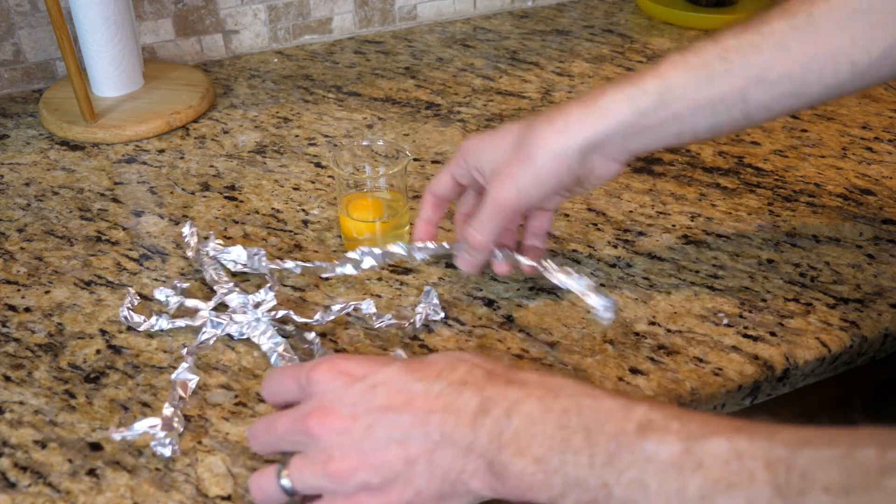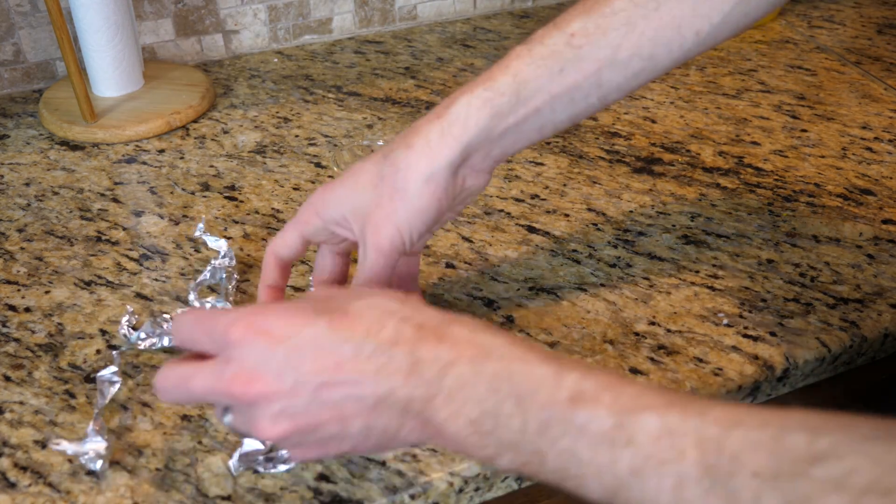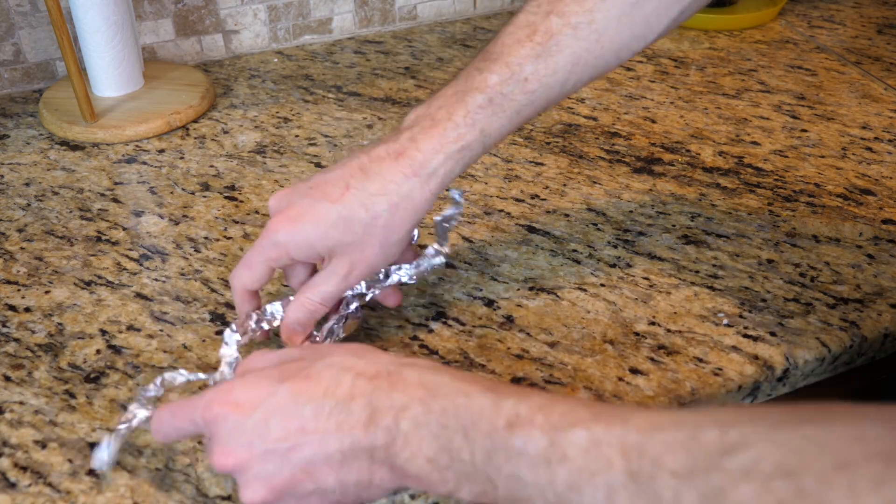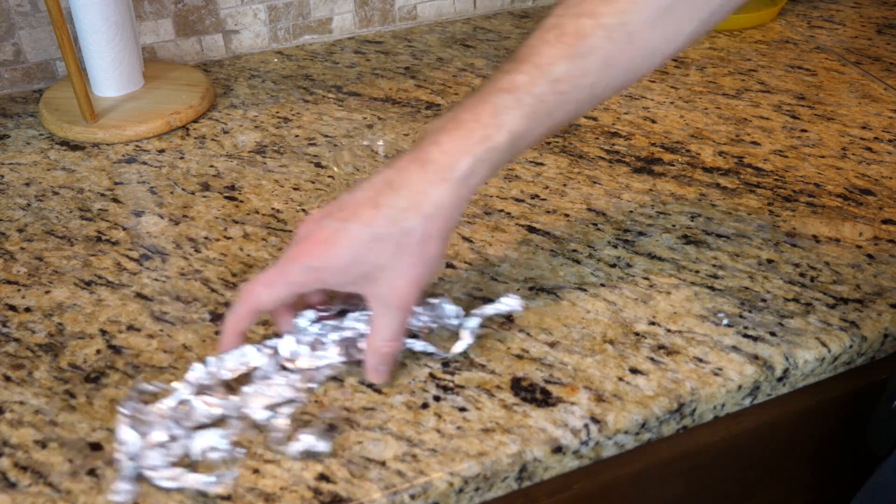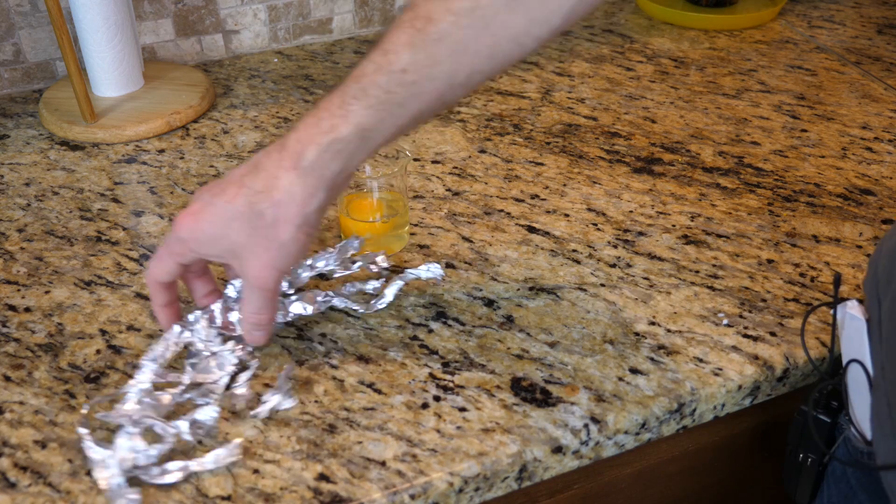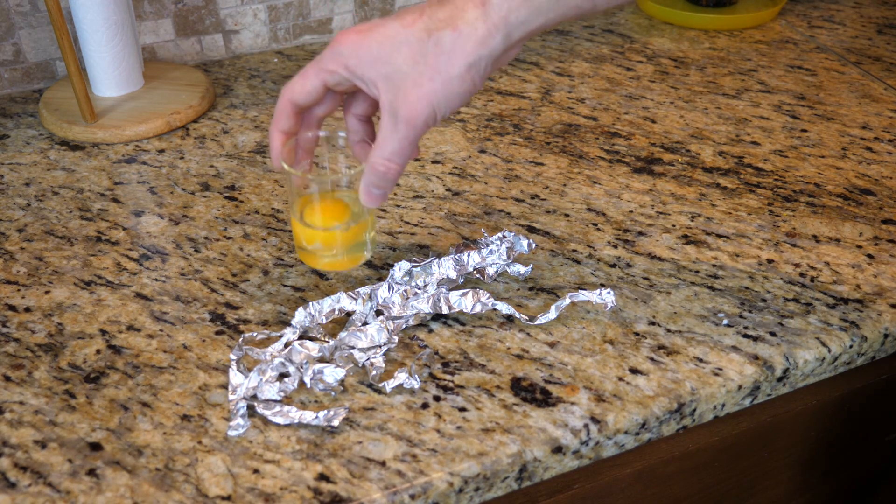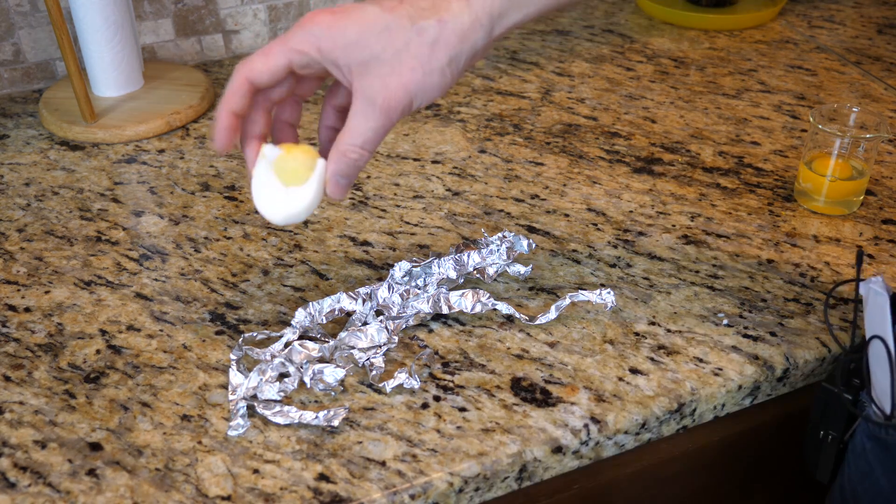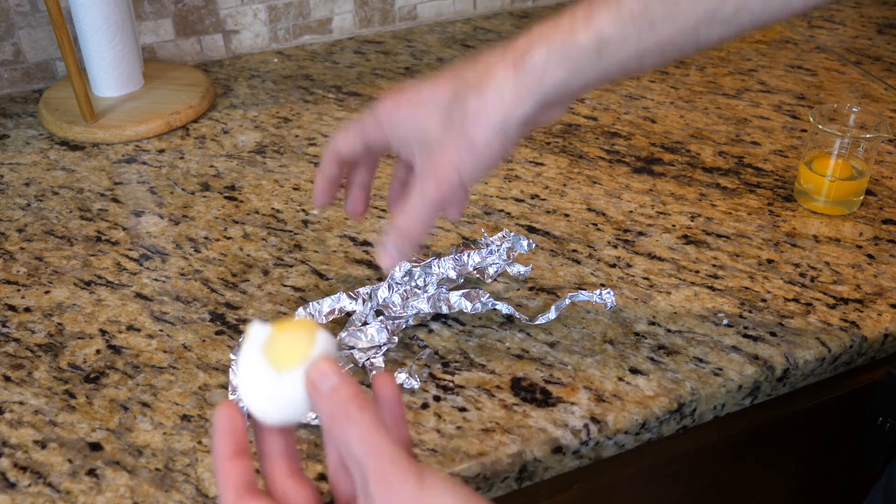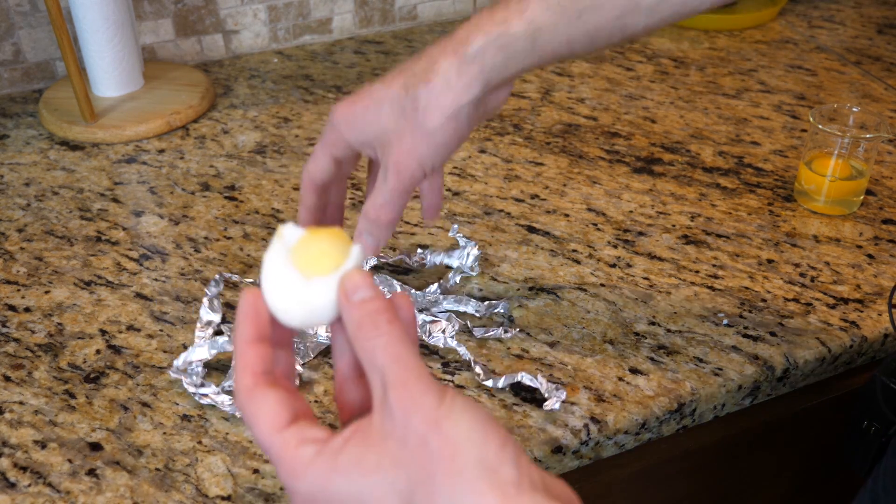So the proteins denature and they all kind of get tangled together. And they can't slide past each other anymore. So they kind of all move as one big clump together. And so that's why when you cook an egg, it just becomes one big solid chunk. Because all of these proteins are tangled together.